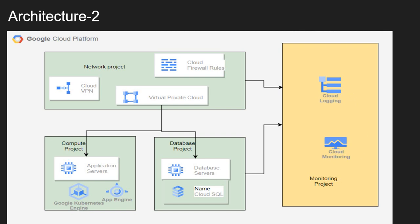Why is this easier for an organization and a best practice? If I want to assign a role to the networking team, I assign the role only into the network project. For the application team, I assign the required role into the compute project. For the database team, I assign the role only to the database project. For any L1 team or monitoring team, I assign roles into the monitoring project only. For this, we create a VPC in the network project and share that VPC across other projects. The project that hosts the shared VPC is called the host project, and the other projects using this shared VPC are called service projects.